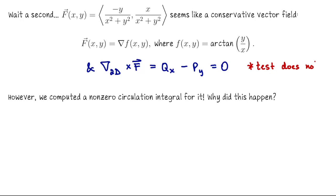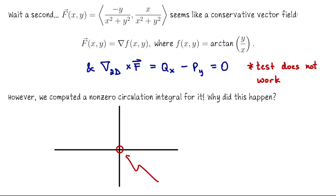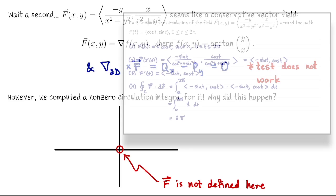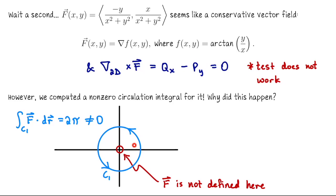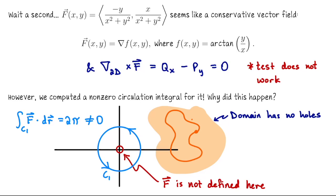However, this is an example of when the test does not work. This vector field is not conservative in any domain that encloses the origin where it's not defined. In a previous example we showed that the circulation of this vector field along the unit circle had a non-zero circulation — the circulation was 2π. That's not a contradiction because this closed loop encloses the point where the vector field is not defined. But if I take a domain which does not enclose the origin — a domain with no holes — and compute the circulation of F around any closed curve in that domain, it will be 0, and on such a domain this vector field would be conservative.